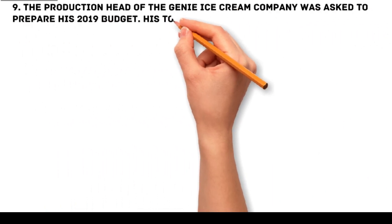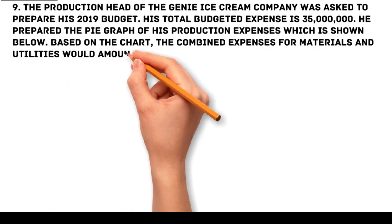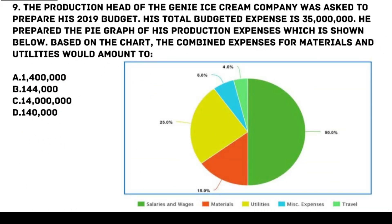Problem 9: The production head of the Genie Ice Cream Company was asked to prepare his 2019 budget. His total budgeted expense is 35 million pesos. Based on the pie graph of his production expenses, the combined expenses for materials and utilities would amount to: a. 1,400,000 pesos, b. 144,000 pesos, c. 14 million pesos, d. 140,000 pesos.